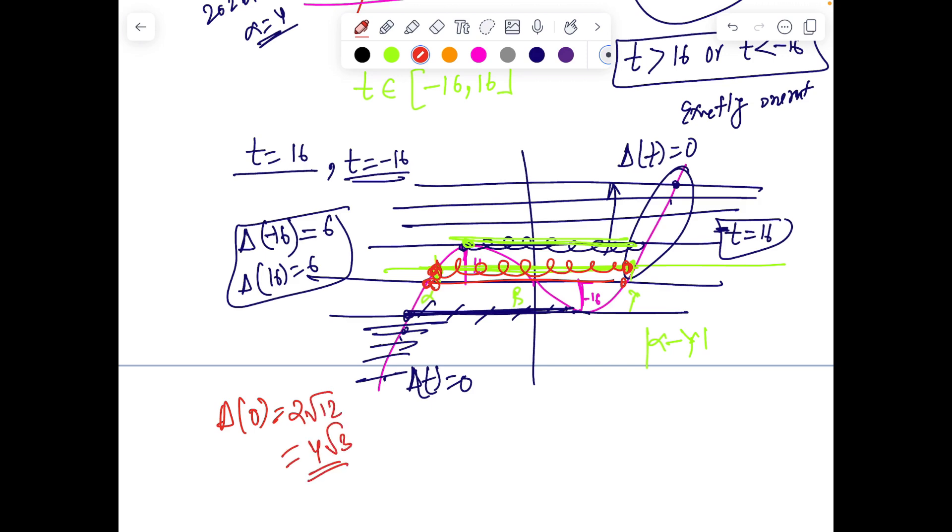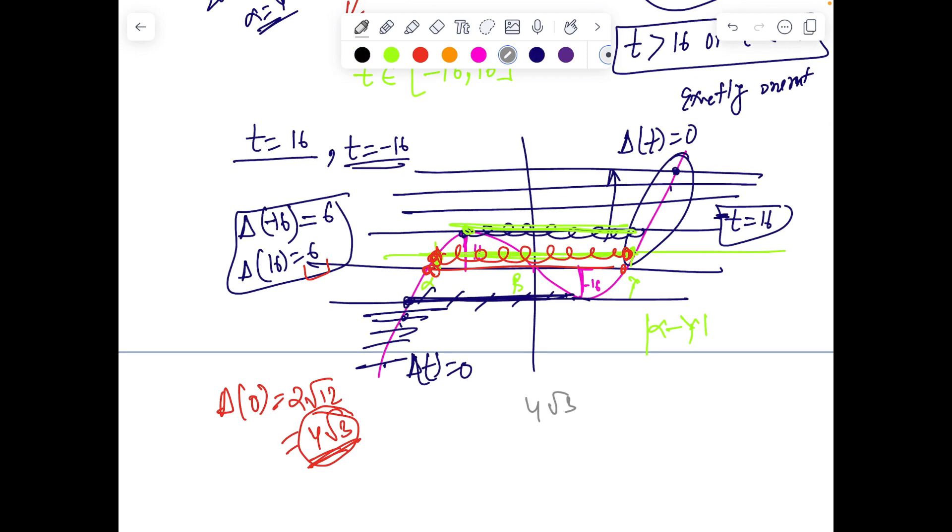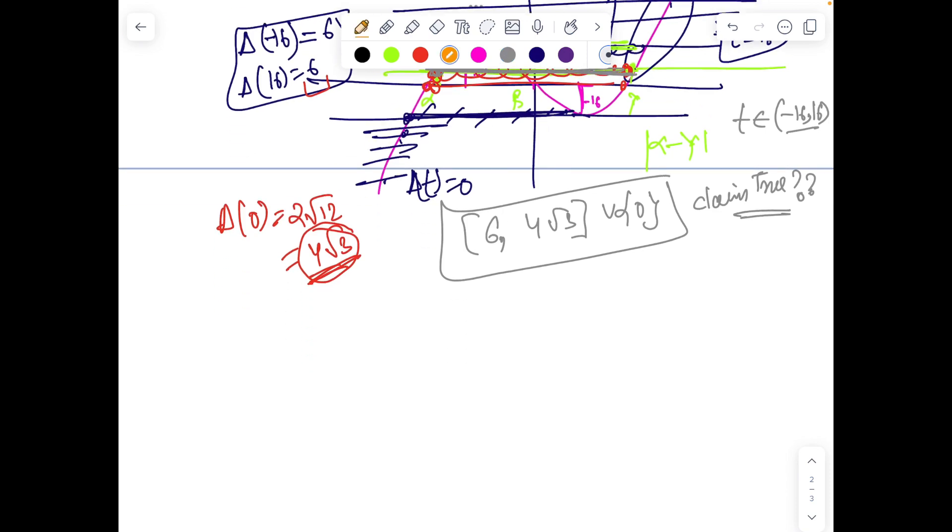Can we directly tell, like, let's say if I calculate Δ(0), that calculation I have made is 2√12, which is basically 4√3. So am I sure the maximum value is going to be 4√3, or minimum is 6, or between 4√3 and 6 also maybe this gapping can be maximized? One very weak reasoning that you can give is I can directly tell the answer is 4√3 to 6 just by looking at a diagram if you try to guess the answers. Union 0. But now, is this claim true? That is the major confusion that we might have, because still we are not sure how the gapping between roots varies as t is belonging to -16 to +16.